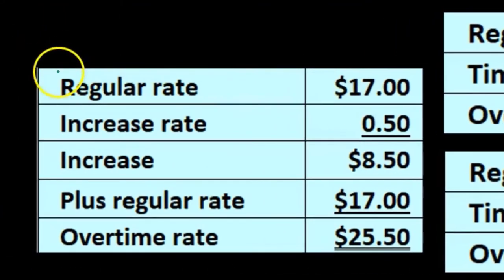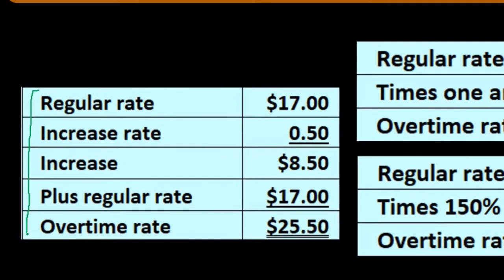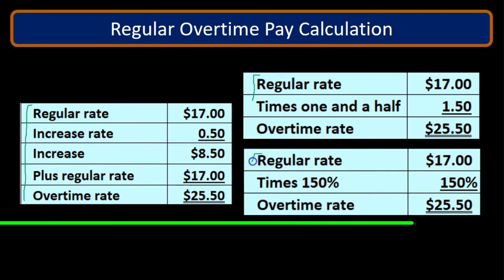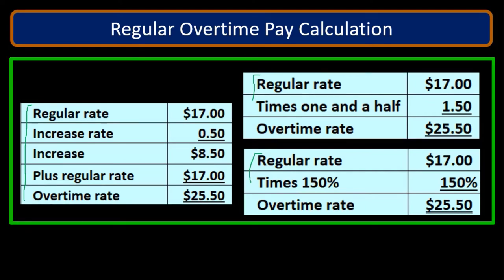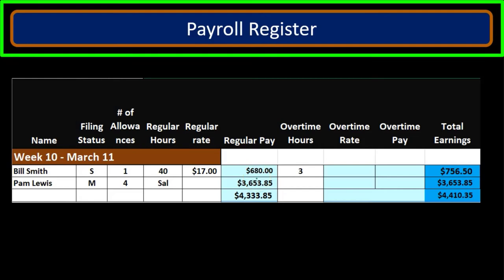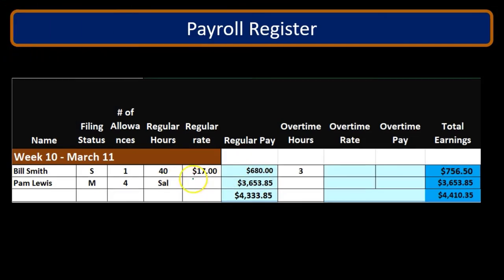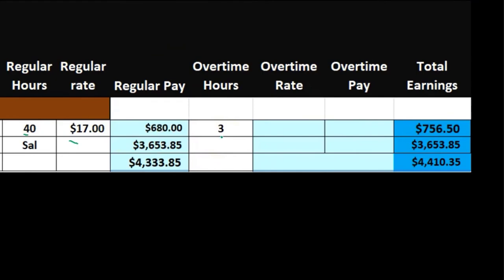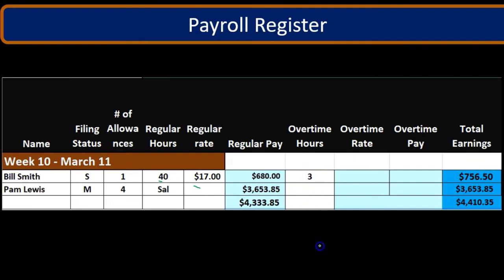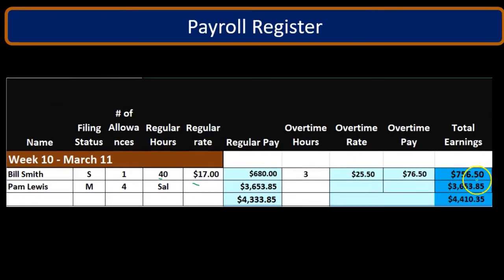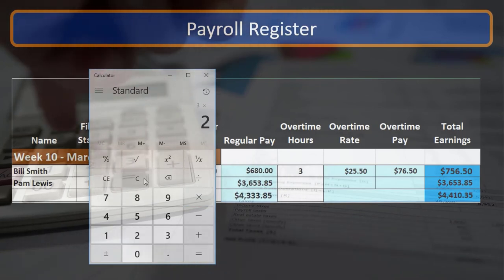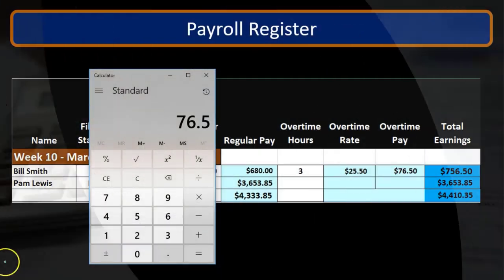Now we're going to go to the payroll register and actually calculate the overtime. We've already filled out the regular pay: 40 hours at $17, which gives us $680. There are three hours of overtime — 43 total hours, 40 regular and 3 overtime. The overtime rate is $25.50, so the overtime pay is three hours times $25.50, which equals $76.50.